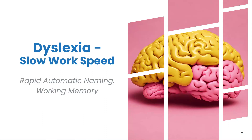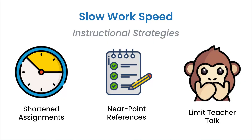It's not uncommon to see a student with dyslexia working slowly. This is due to weakened rapid automatic naming (RAN), and their working memory struggling to hold information and work with it. To support a student with slow working speed: provide shortened assignments, as reduced RAN can slow dyslexic students down significantly. Give students what we call near-point references — a physical manipulative or even a graphic organizer — to help reduce load on working memory and prompt recall.